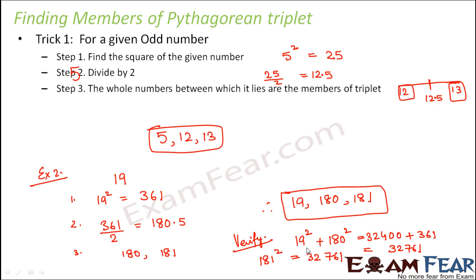Now another important thing to note here is with this trick you will always be able to find out a Pythagorean triplet for a given odd number. But every time the given odd number would be the smallest member of the triplet. For example in the first case, 5 was the given number. So if you look at the triplet, 5 is the smallest member of the triplet. Similarly in this case,